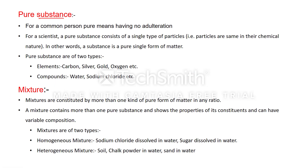First of all, about pure substance. For a common person, 'pure' means having no adulteration. Adulteration means impurity or contamination. For example, if we say we are taking pure milk, pure milk for a common person means it does not contain any impurity. But in terms of science, that milk which is pure for a common person is not a pure substance. So what is a pure substance in terms of science? For a scientist, a pure substance consists of a single type of particles.